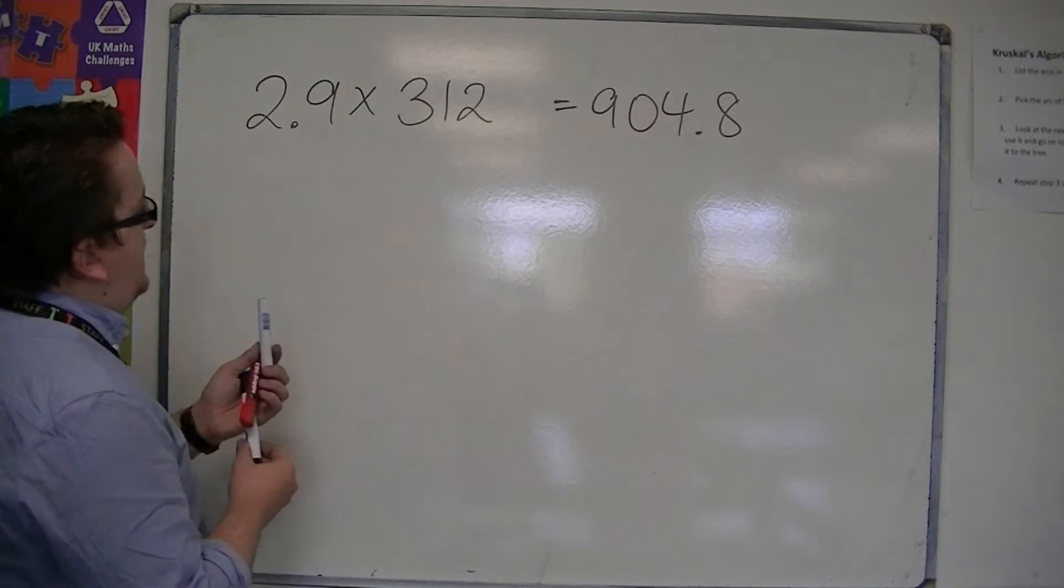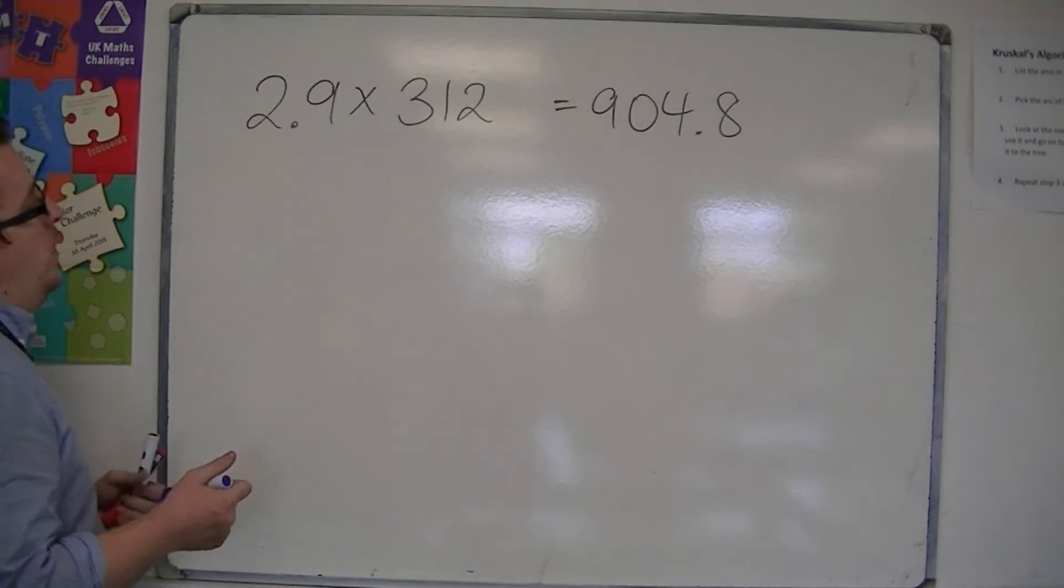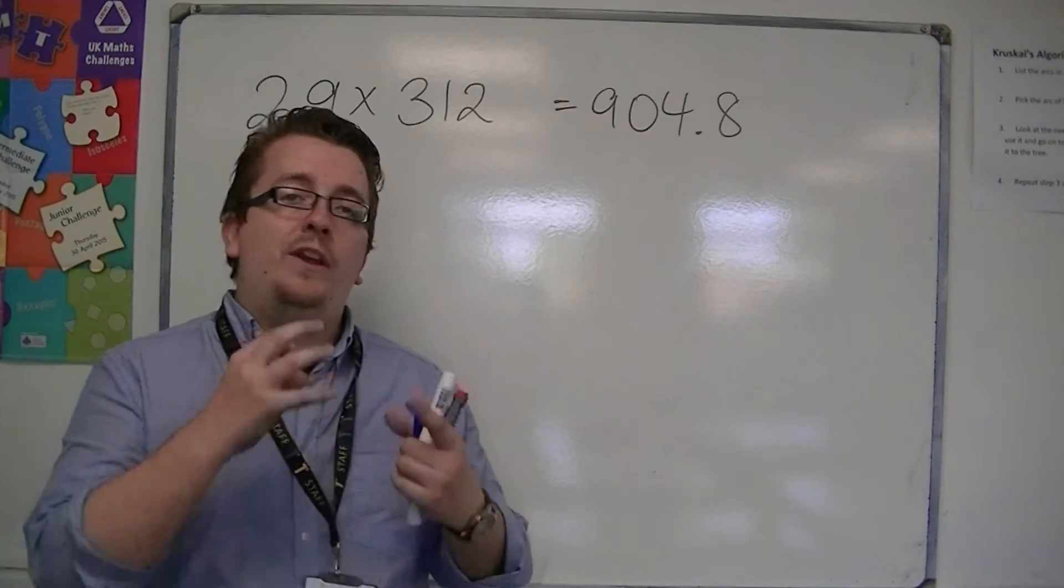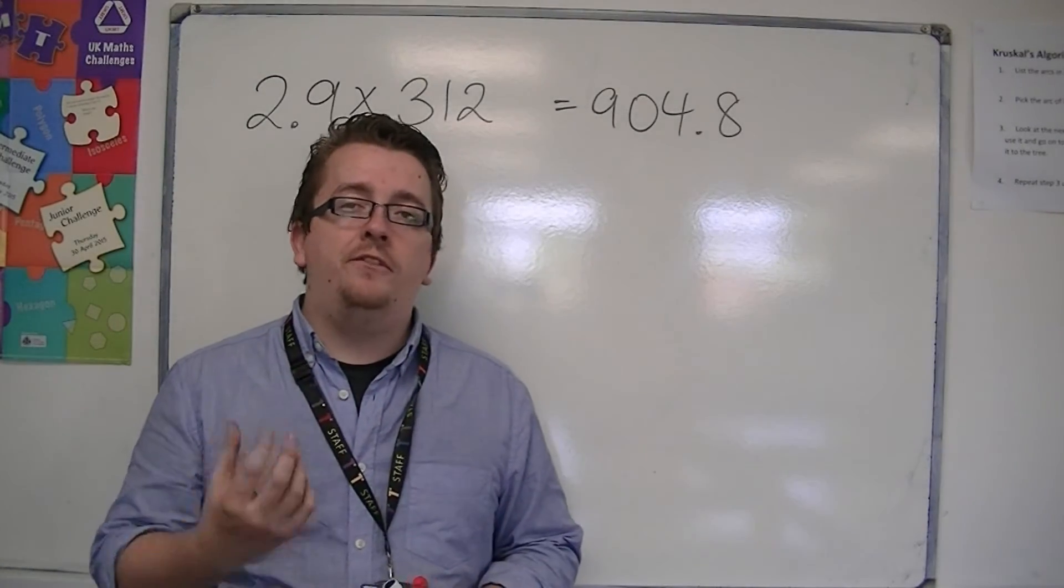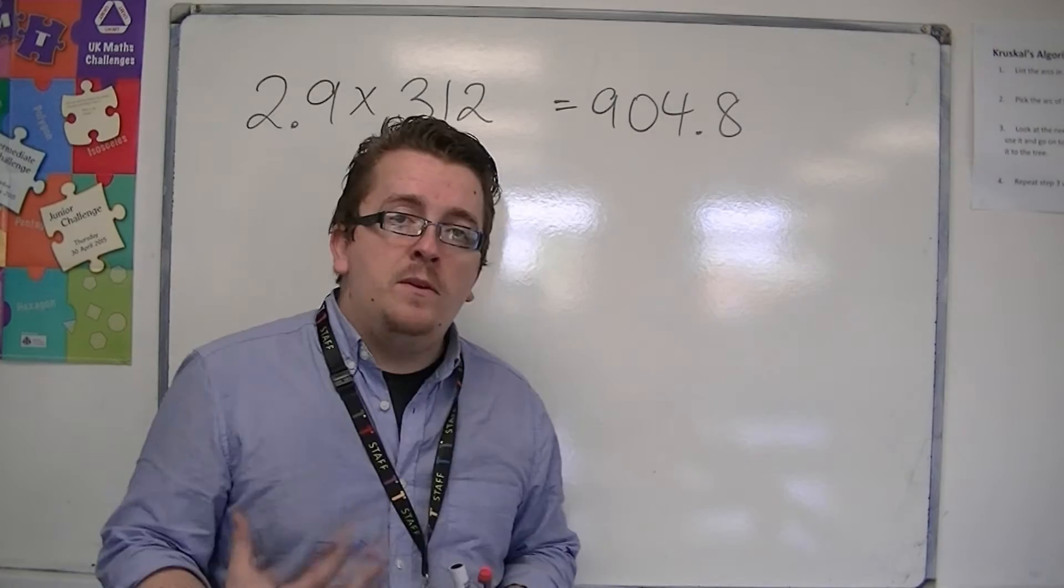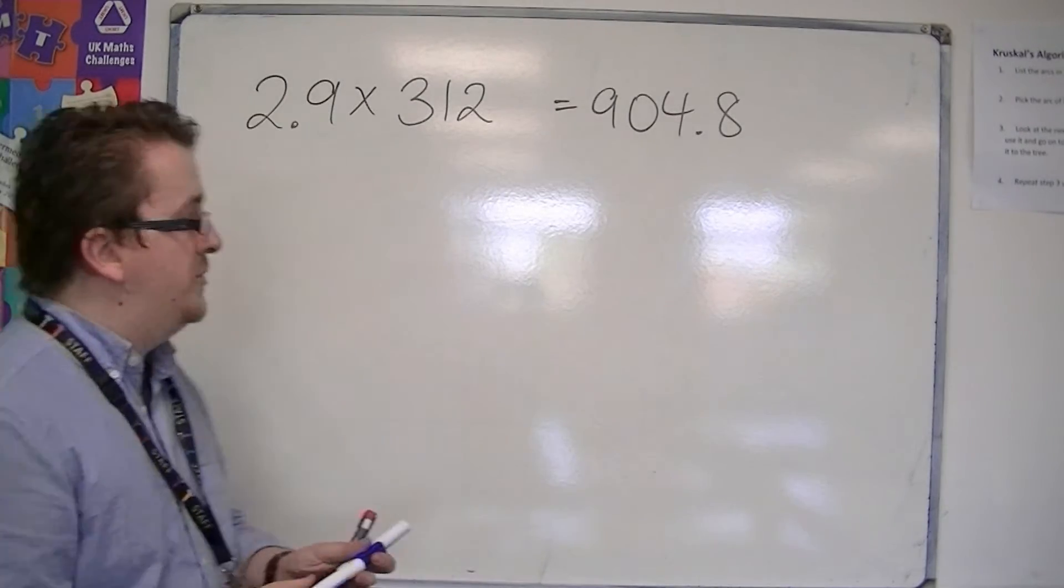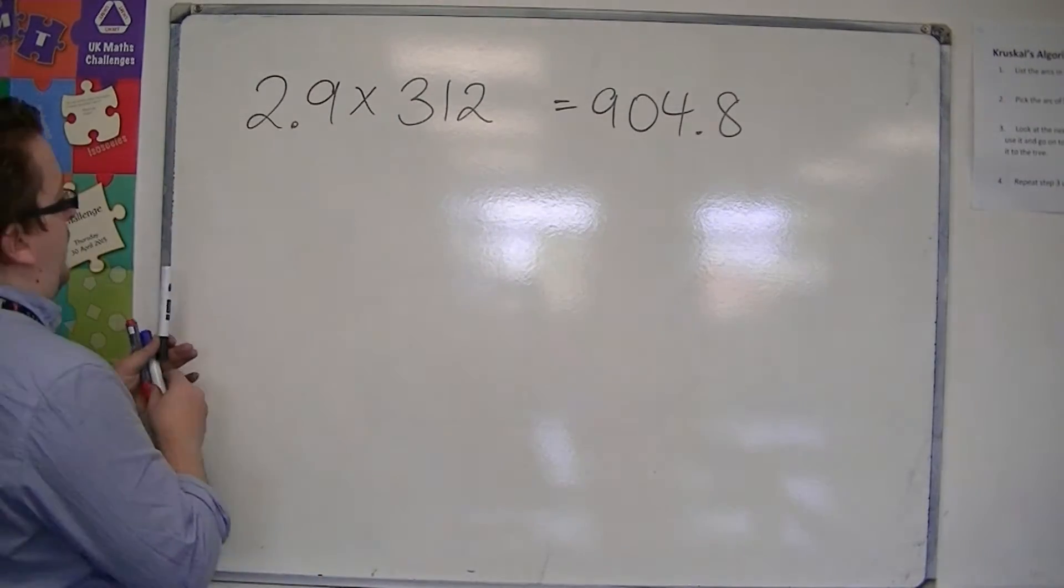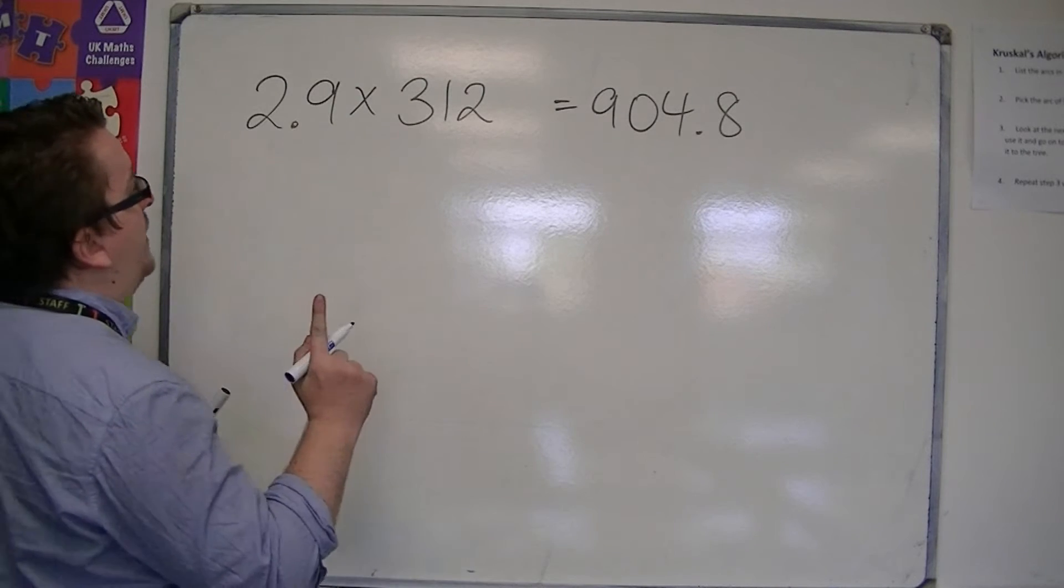If you were going to estimate this calculation, what we can do is round each of the numbers to one significant figure, and that's really the method that we are going to use. So to estimate this, I would round each one to one significant figure.